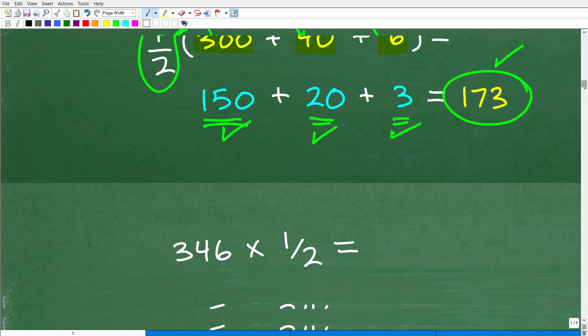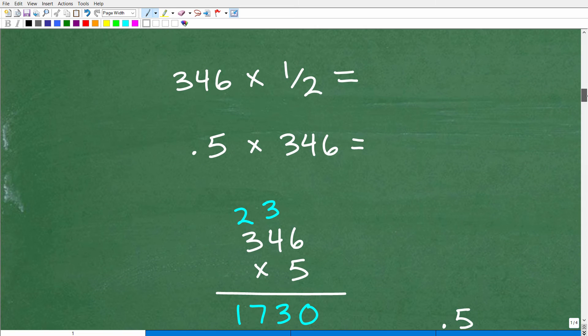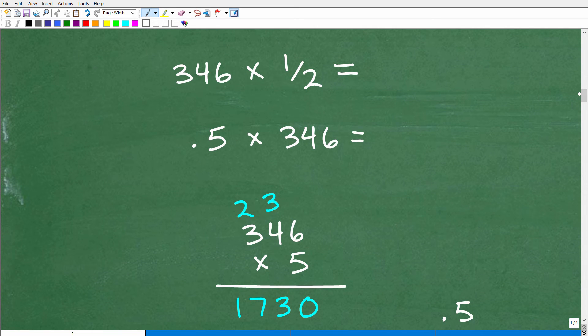Okay. So now let's go ahead and do this problem one other way. And there's probably different ways you can do this. I can't think of any right off the top of my head because I just put this video together quite quickly. But let's talk about decimals. So let's look at this problem. 346 times 1 half.